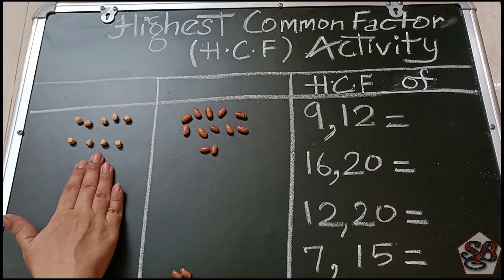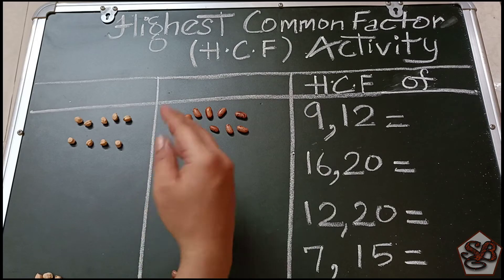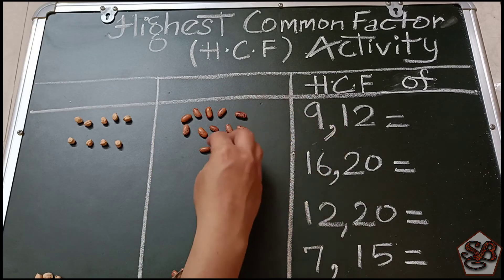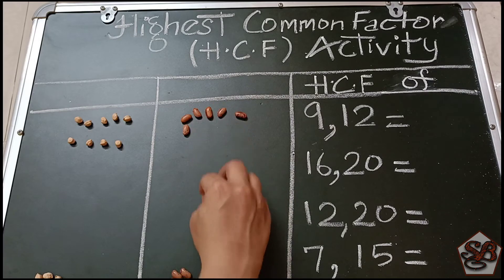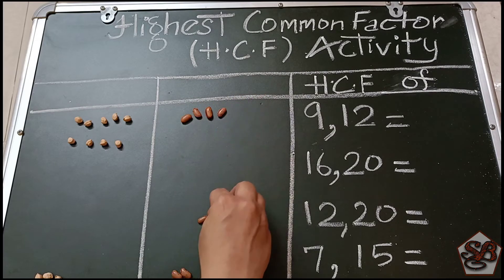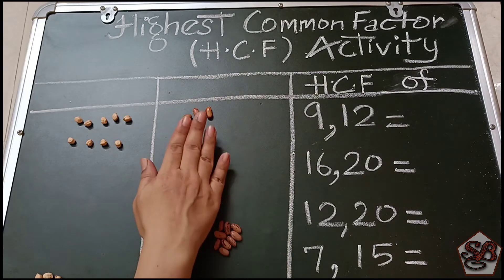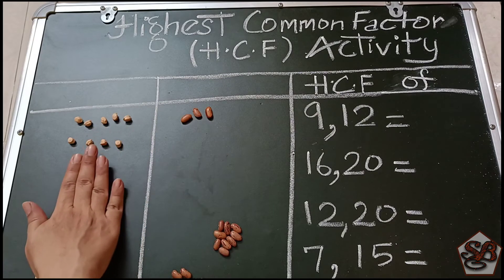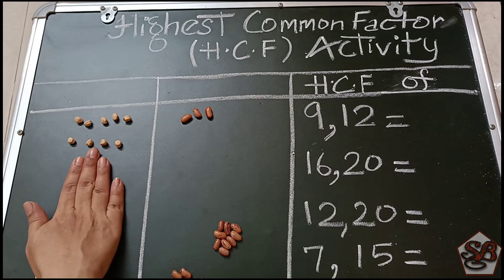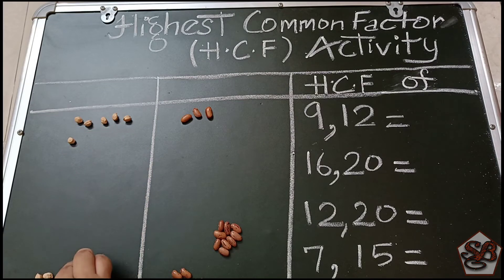The smaller number is 9, so we will subtract 9 from the larger group. Let's take out 1, 2, 3, 4, 5, 6, 7, 8, and 9. So we have subtracted 9 from the 12. Now we have 3 remaining here, and the bigger number there is 9.